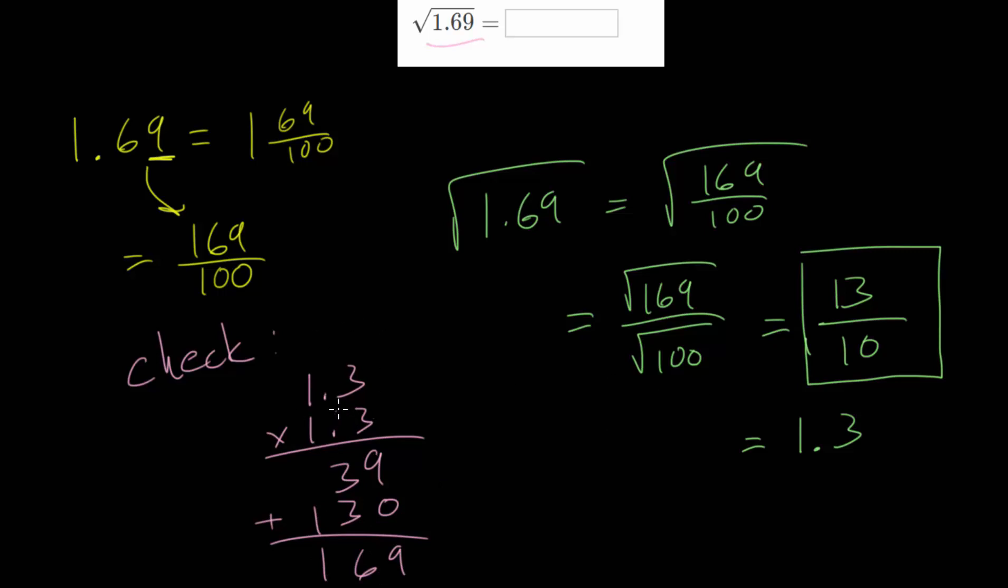Now to include the decimals, we just count up how many decimal places we have. We've got one there and one there. And so we have two in total, which means we want to take our final answer and move that decimal place twice over. So what we found is that 1.3 squared is this 1.69, which is exactly what we expected.